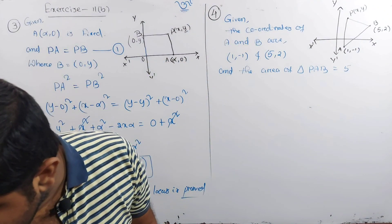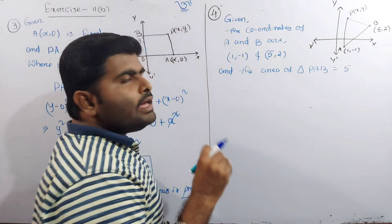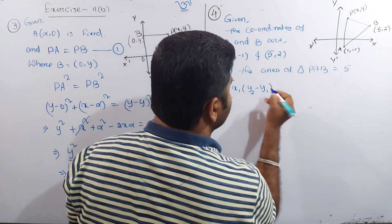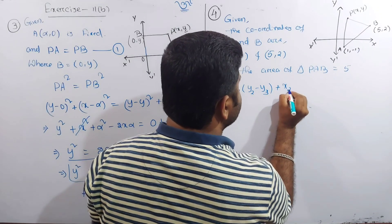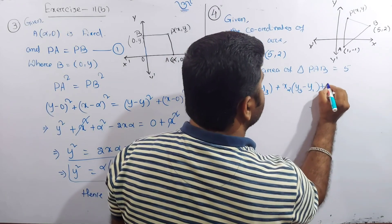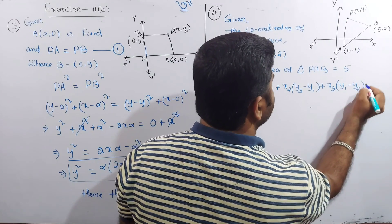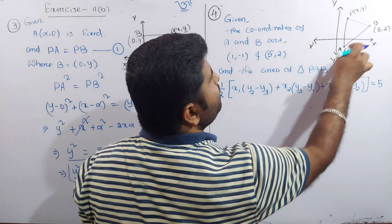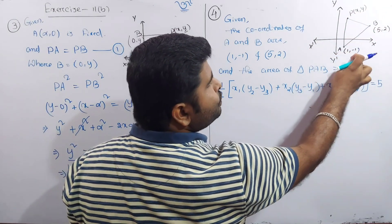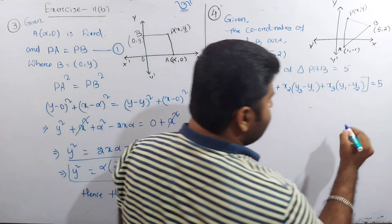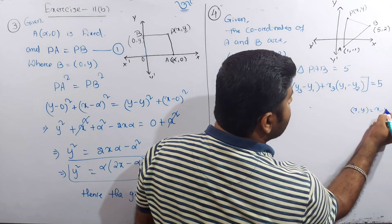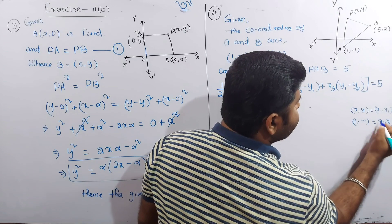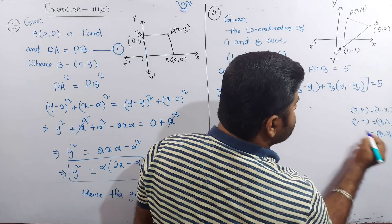The area of triangle PAB is equal to 5. The area formula is: half × [x₁(y₂ − y₃) + x₂(y₃ − y₁) + x₃(y₁ − y₂)]. Here x₂ = 1, y₂ = −1, and x₃ = 5, y₃ = 2.